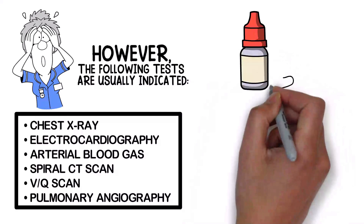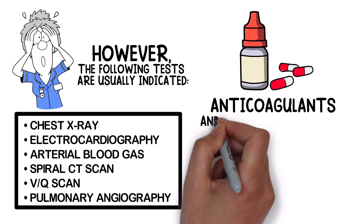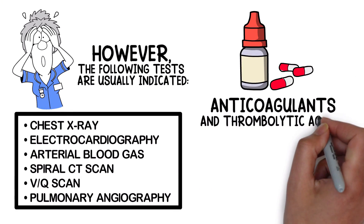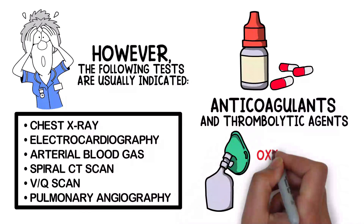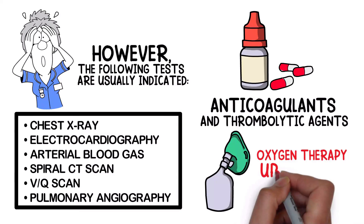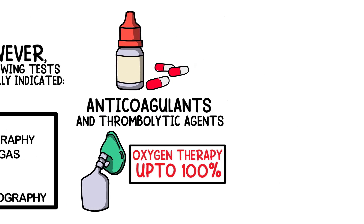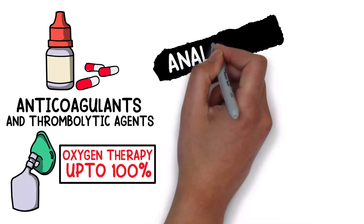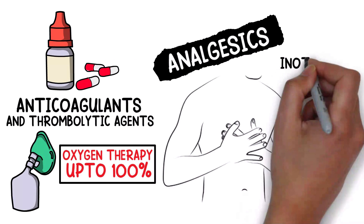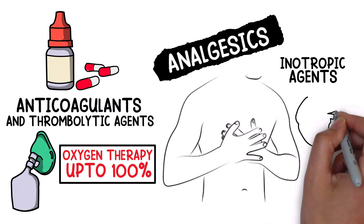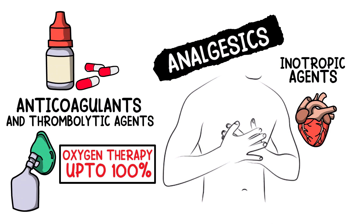A pulmonary embolism can be treated with anticoagulants and thrombolytic agents. Also note that the patient may require oxygen therapy up to 100%. Analgesics may be indicated in order to relieve chest pain, and inotropic agents may be given to maintain circulation.